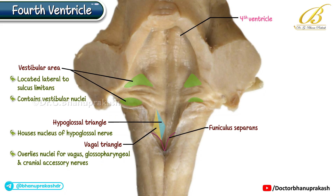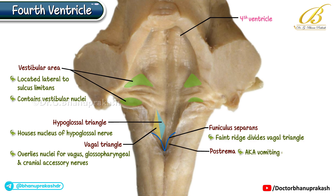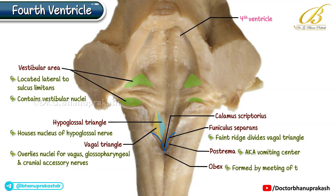The funiculus separens, a faint ridge, divides the vagal triangle, and below this ridge lies the area postrema, also known as the vomiting center. Finally, the calamus scriptorius resembles a pen nib in the lower part of the fourth ventricle's floor. The obex, a small fold, is formed by the meeting of the taeniae at the inferior angle of the ventricle.